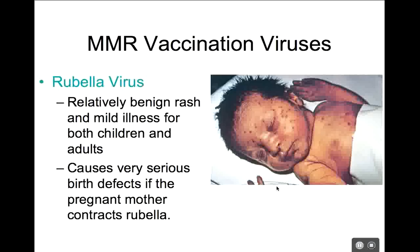Rubella is really not a big deal for kids or adults — it's a really big deal for developing fetuses. We vaccinate against rubella really to protect developing fetuses. So that's measles, mumps, and rubella — that very common vaccine we give to kids to protect them against all three.